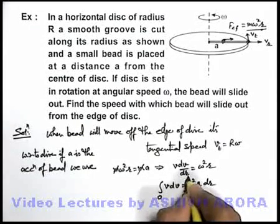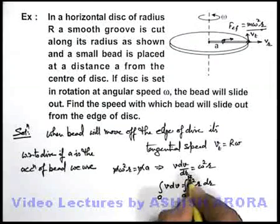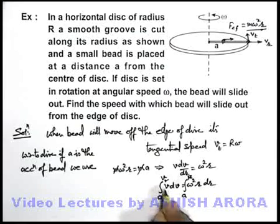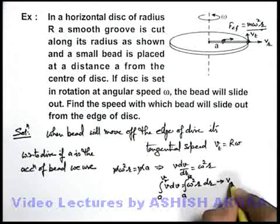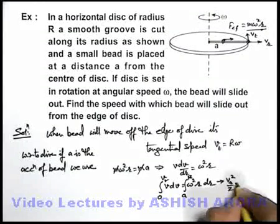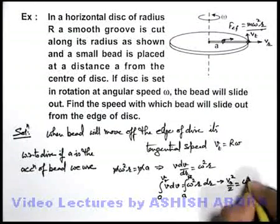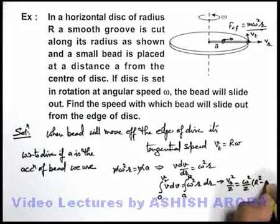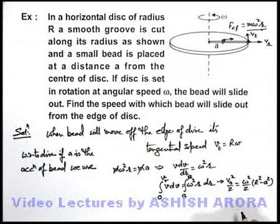And when it'll move off the edge, its radius will become capital R and say speed becomes vr. So from here we can directly get the value of vr. As on integrating we'll get vr square by two is equal to omega square by two into r square minus a square. So from here we'll get the value of vr.